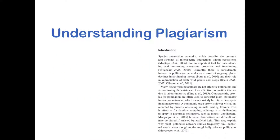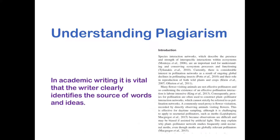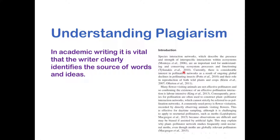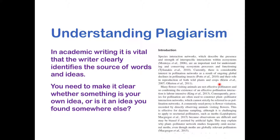So what is plagiarism? Plagiarism is a really important part of academic writing. In academic writing it's really important that the writer clearly identifies the source of words and ideas. Here we have a paper about interaction networks, and you can see all the way through this paper there are references that direct us to sources and tell us where each source came from — this is an absolute characteristic of academic writing. When writing in an academic style, you need to make it clear whether something is your own idea or an idea found somewhere else. Failing to do that is called plagiarism.